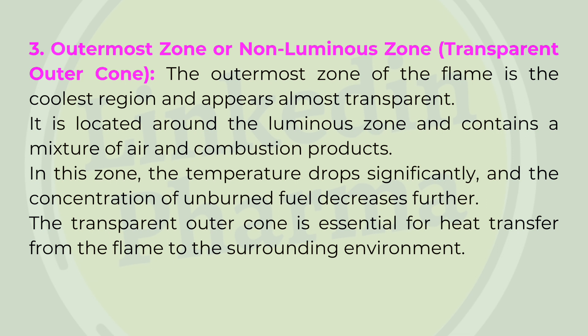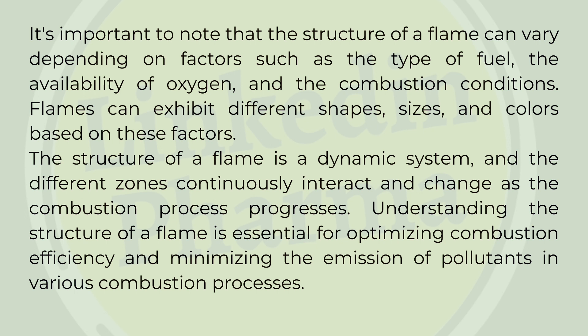3. Outermost zone or non-luminous zone (transparent outer cone) — the outermost zone of the flame is the coolest region and appears almost transparent. It is located around the luminous zone and contains a mixture of air and combustion products. In this zone, the temperature drops significantly and the concentration of unburned fuel decreases further. The transparent outer cone is essential for heat transfer from the flame to the surrounding environment. It is important to note that the structure of a flame can vary depending on factors such as the type of fuel, the availability of oxygen, and the combustion conditions. Flames can exhibit different shapes, sizes, and colors based on these factors.